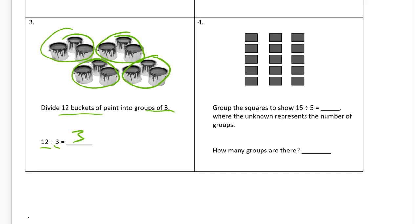Now we're grouping number four. We're grouping squares to show 15 divided by 5 equals... we're going to find out. The unknown, the unknown is what we don't know, that's this that we're trying to figure out, represents the number of groups. So we know that there's five in each group and we could circle them.